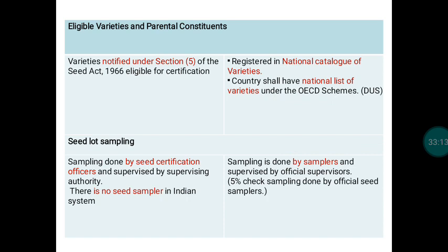Under OECD schemes, all member countries must have a national list of varieties, and only varieties in that national list can be produced under OECD schemes. Regarding seed lot sampling: under IMSCS, after processing, the Seed Certification Officer (SCO) takes the sample and submits it for seed testing. Under OECD, authorized samplers are empowered to take samples, which are then submitted, with official supervisors also taking samples to verify accuracy.